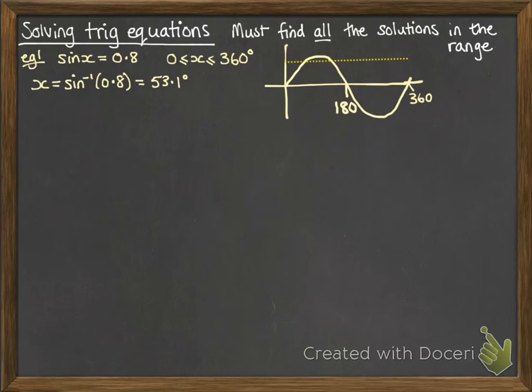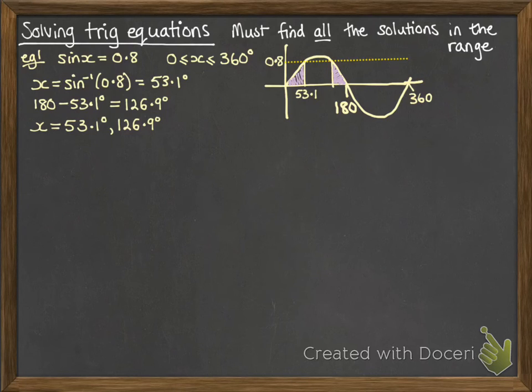So if we pop our 0.8 on there, then we're looking for anywhere where that curve is 0.8. So our first solution was just there of 53.1. Our second solution is just to the right of it where that 0.8 line hits the curve again. Now these curves are symmetrical, so we can use that property there where those two purple shaded bits are going to be exactly identical, so we use that to work backwards to find the other solution. So do 180 minus 53.1 and we get our second solution, so x is 53.1 and 126.9 degrees.